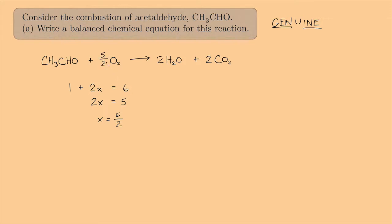Maybe I don't want a fraction — I want a whole number. That's okay; just multiply everything by two. So I get 2 CH₃CHO + 5 O₂ → 4 H₂O + 4 CO₂. Let's check it's balanced: carbons — 2×2 = 4 on both sides. Hydrogens — (3+1)×2 = 8 on both sides. Oxygens — 2 + 10 = 12 on the left; 4 + 8 = 12 on the right. It's balanced.